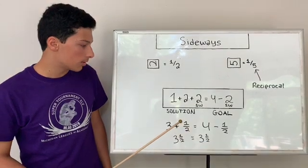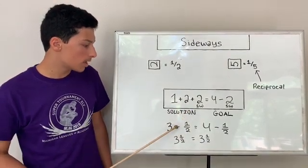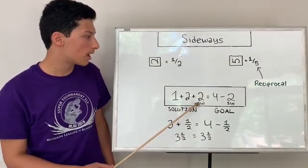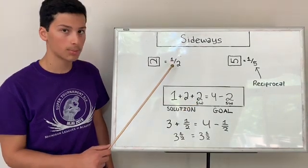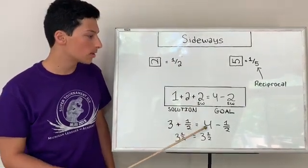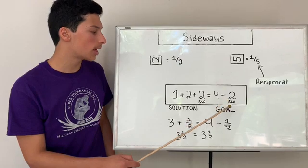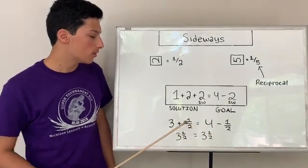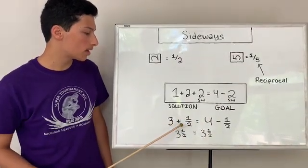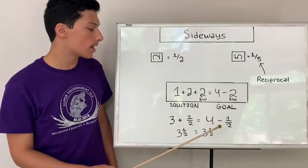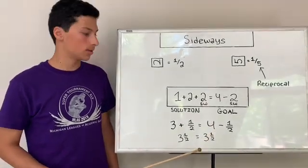So, in this solution, if you have 1 plus 2, that's 3, and you add another half to that because 2 sideways is its reciprocal, 1 half, equals 4 minus 2 sideways, which is 4 minus 1 half. So, if you do 3 plus 1 half, that equals 3 and 1 half, and if you do 4 minus 1 half, that's also 3 and 1 half. So, the solution does equal the goal using sideways.